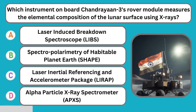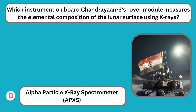Which instrument on board Chandrayaan-3's rover module measures the element composition of the lunar surface using X-rays? Alpha Particle X-ray Spectrometer.